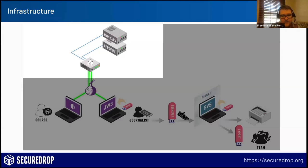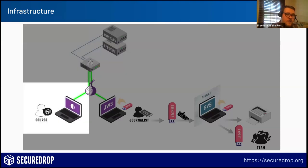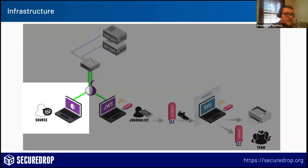To access a SecureDrop, all a source needs is a special piece of software called the Tor browser, which lets them get online to the Tor network. Then they go to an organization's SecureDrop and upload a file or send a message. Sources can submit pretty much anything — messages, documents, photos, audio, video — as long as it's under 500 megabytes.